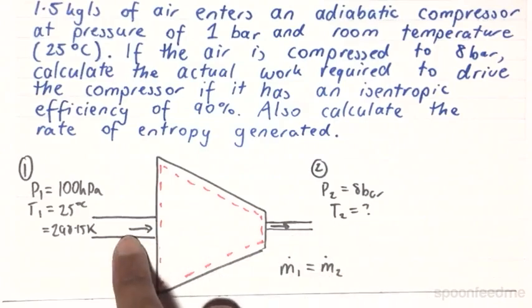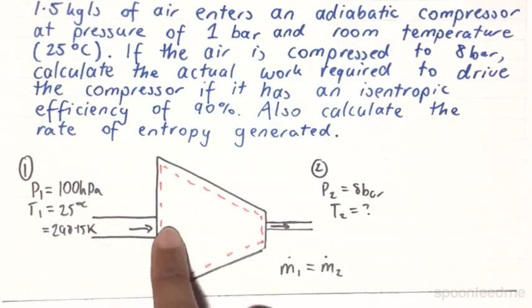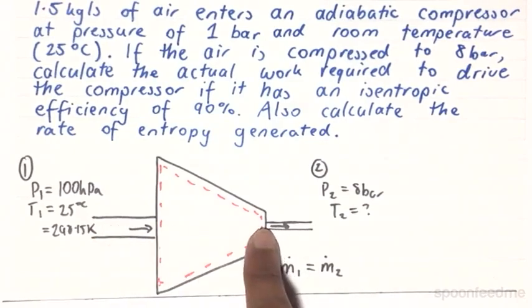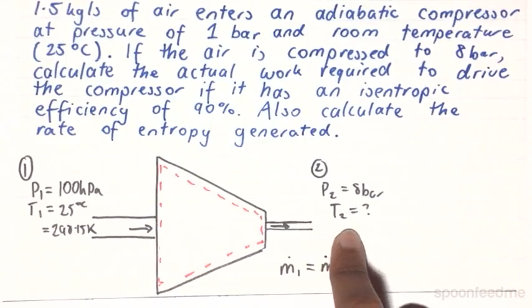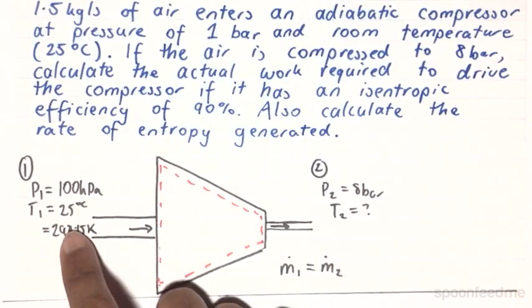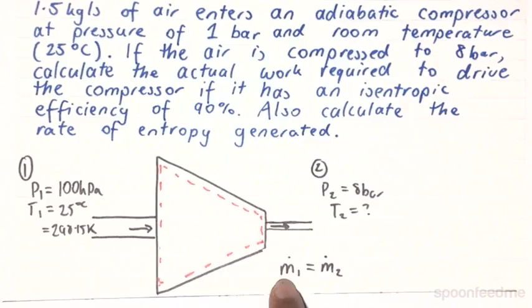We also know, due to the steady flow assumption, that the mass flow rate going into the system has to equal the mass flow rate going out of the system. And since the mass flow rate going into the system is only at state 1, and the mass flow rate going out of the system is only at state 2, it follows that M1 dot is going to equal to M2 dot.